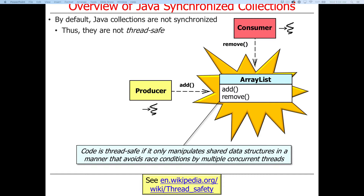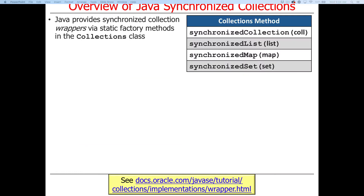What are we talking about when we say collections? Well, things like ArrayList, LinkedList, and HashMap — those are all examples of collections. Java provides a whole bunch of wrappers, or really the word decorators is a better term — decorators that are used to wrap or decorate built-in collections with synchronization wrappers.